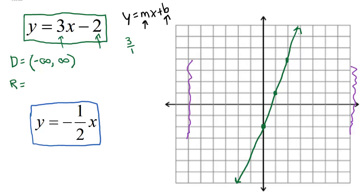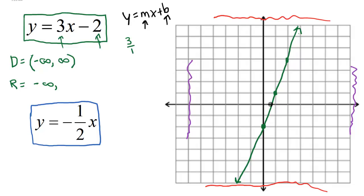For the range, we look at the highest and lowest y values. If we follow the line down, the y values keep going forever toward negative infinity. If we increase the y values along the line, they keep going toward positive infinity. So the range is also negative infinity to positive infinity — which we can also call all real numbers, since every number is included in both the domain and range.